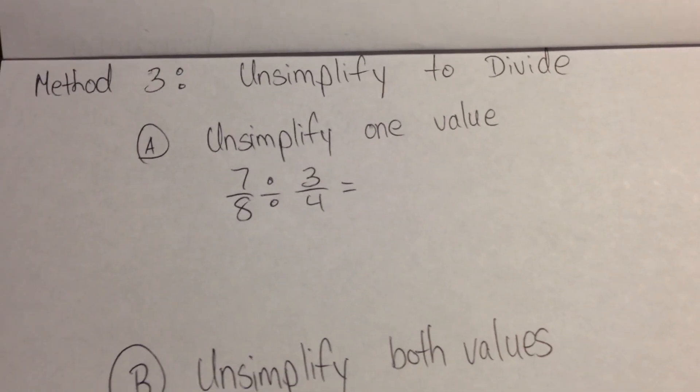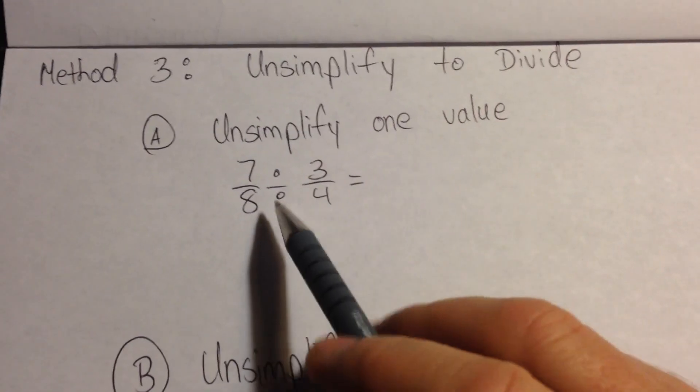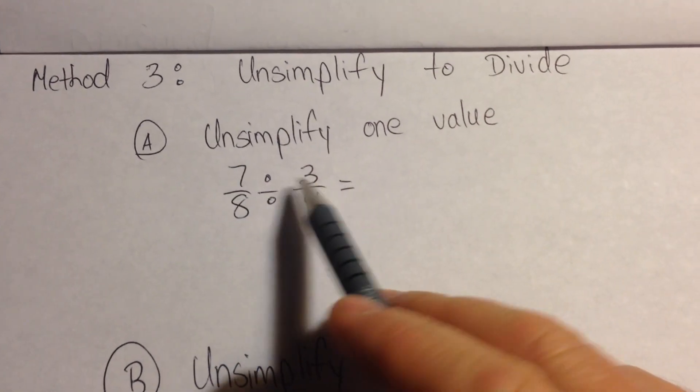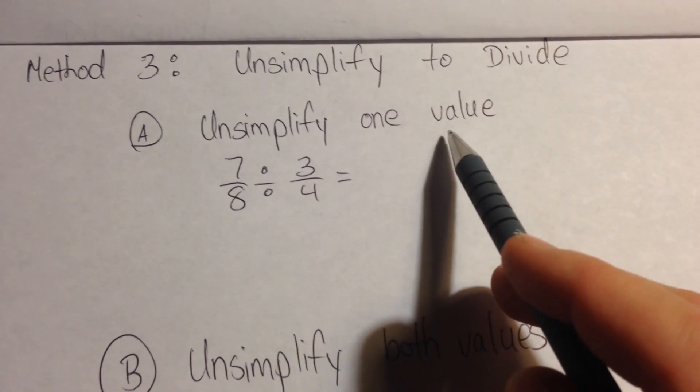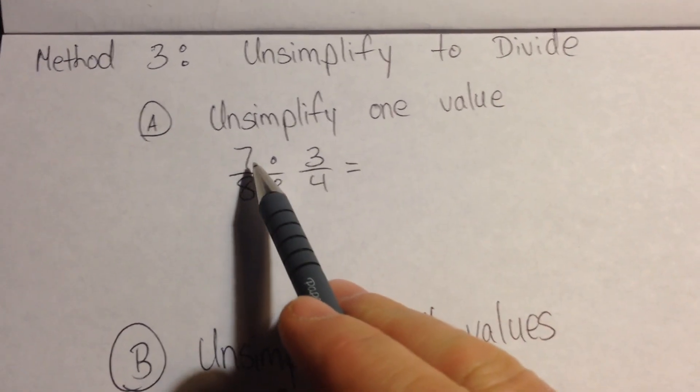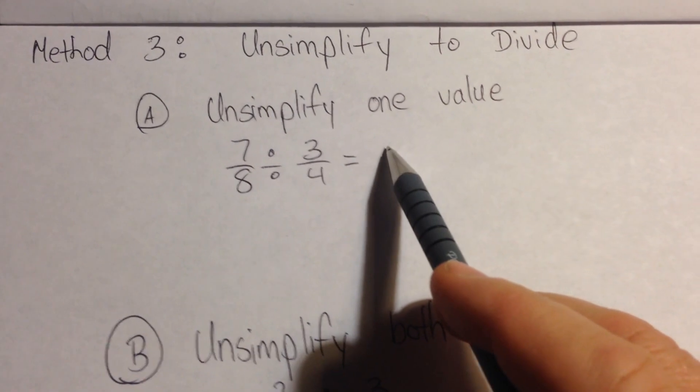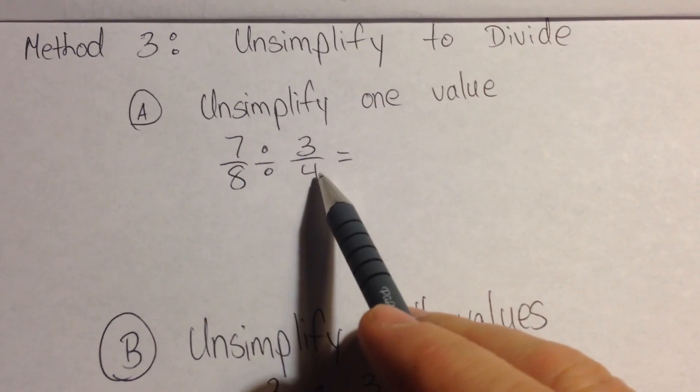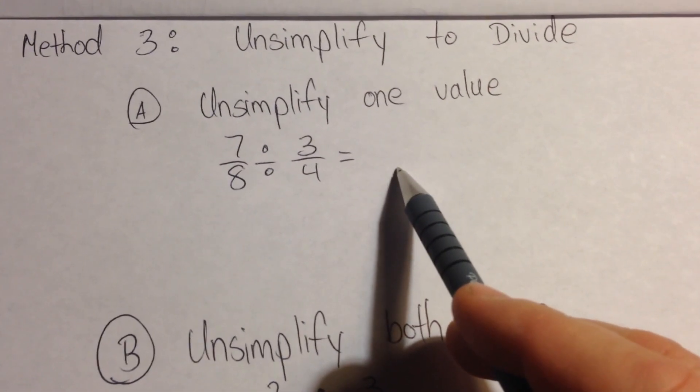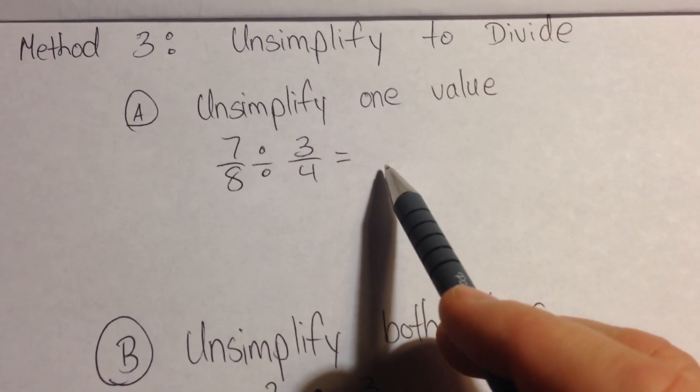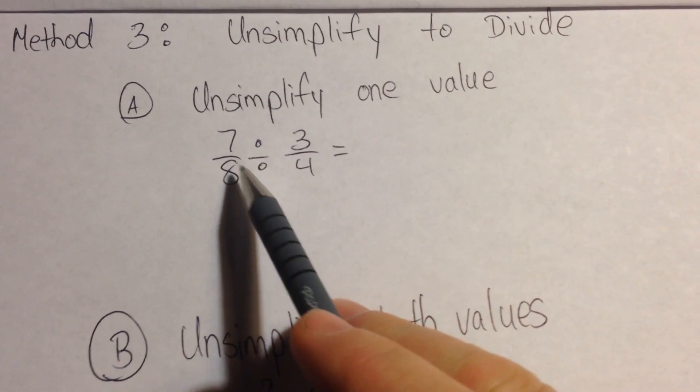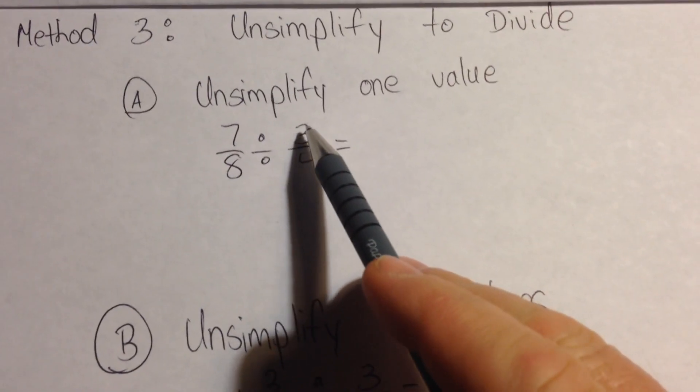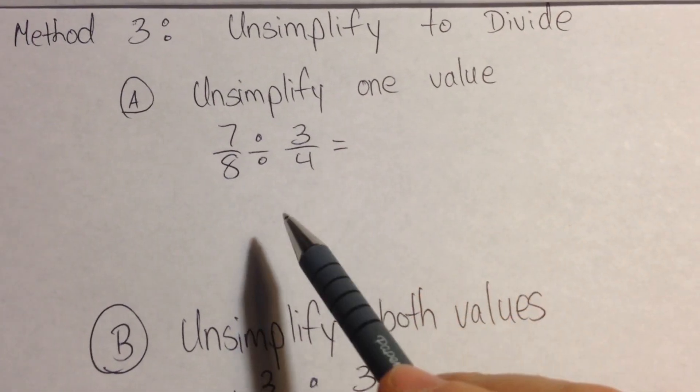First of all, as always, we'll look to divide our numerator and our denominator. This first method has us unsimplifying one value. So if we look, 7 divided by 3 will not give us a whole number. 8 divided by 4 will give us a whole number. So what we're actually going to do is we're going to make an equivalent fraction to 7 eighths that would allow us to divide the numerator by 3 and the denominator by 4.